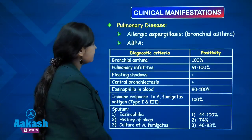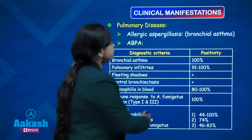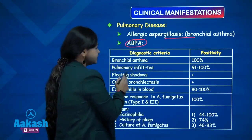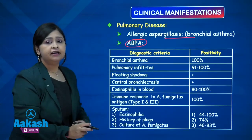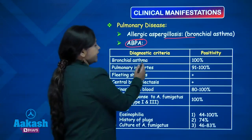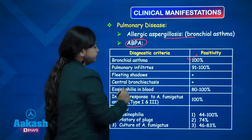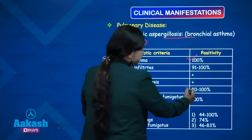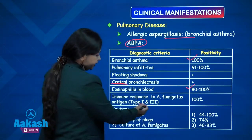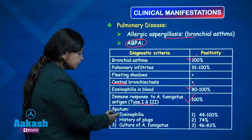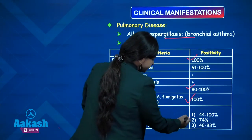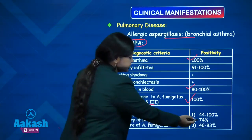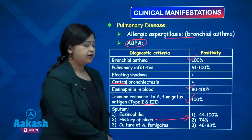Coming to clinical manifestations of pulmonary disease: the most common manifestation is allergic aspergillosis presenting as bronchial asthma. ABPA — allergic bronchopulmonary aspergillosis — is an important clinical entity. Diagnostic criteria include: bronchial asthma in 100% of cases, pulmonary infiltrates with fleeting shadows, central bronchiectasis, eosinophilia in blood in 80 to 100% of patients, immune response to Aspergillus fumigatus type 1 and type 3 in 100% of patients, sputum eosinophilia, history of coughing up plugs of mucus entangled with fungal hyphae in 74% of patients, and culture positivity in 46 to 83% of patients.